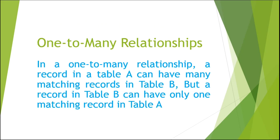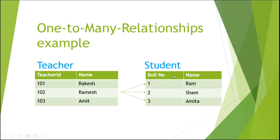Now moving to the one to many relationship. In a one to many relationship, a record in table A can have many matching records in table B, but a record in table B can have only one matching record in table A. For example, suppose we have two tables: teacher and student. Teacher ID 102, Ramesh, teaches students with rule number one, two, and three — named Ram, Sam, and Hamish. So one teacher teaches multiple students, meaning there exists a one to many relationship.